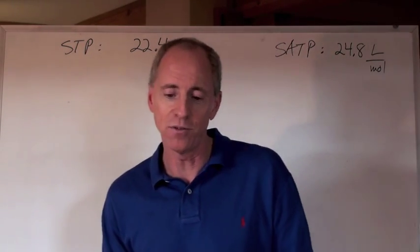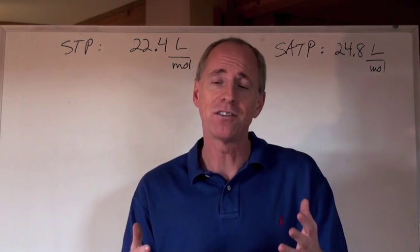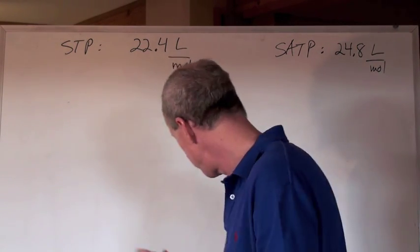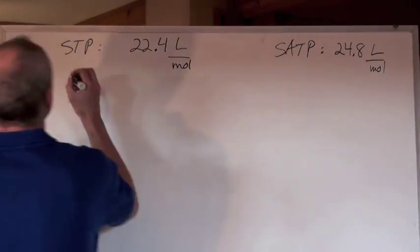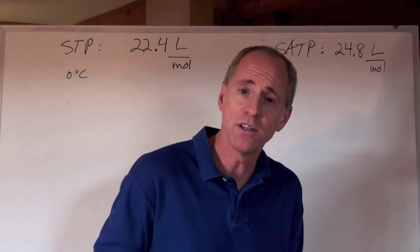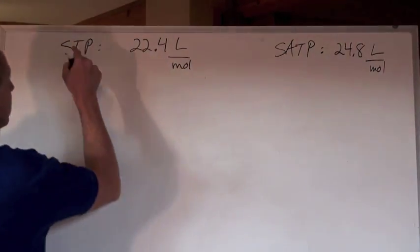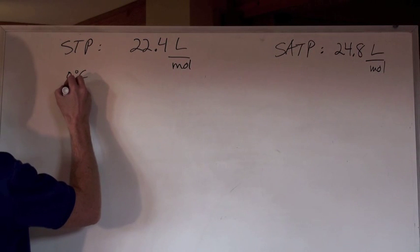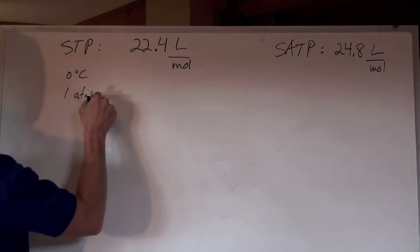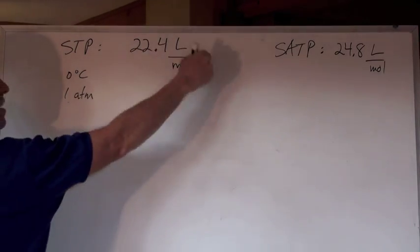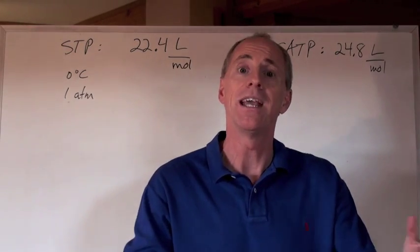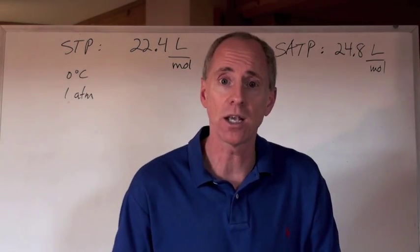STP — Standard Temperature and Pressure. The standard temperature is zero degrees Celsius, which is 273 K, and the standard pressure is one atmosphere. So at zero degrees Celsius and one atmosphere, the molar volume of a gas is 22.4 liters — that's what one mole of gas will occupy.